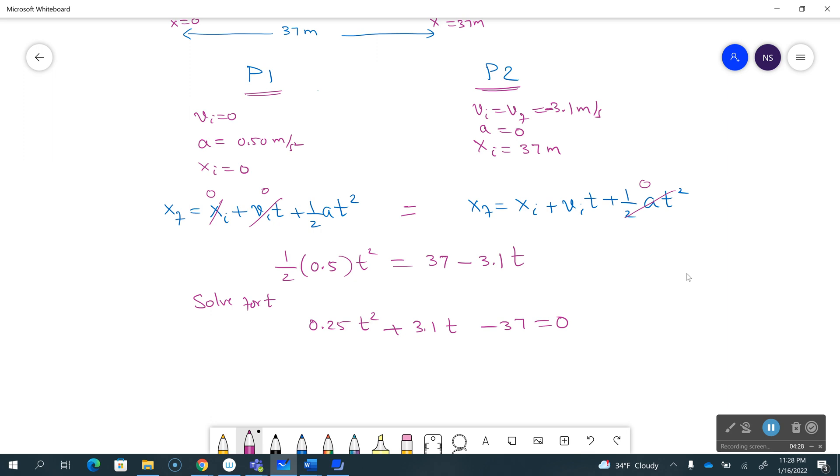The simplified equation is 0.25*t squared plus 3.1*t minus 37 is equal to zero. So I can solve this. I'll put it in my calculator, polysolve. My first coefficient is 0.25, and then 3.1, and then c is negative 37.